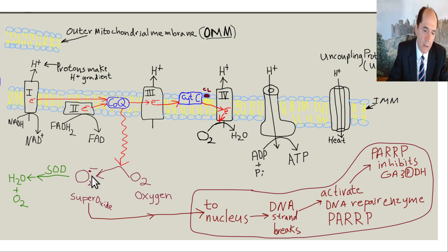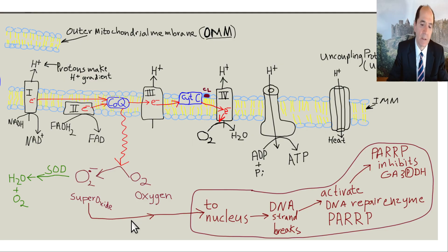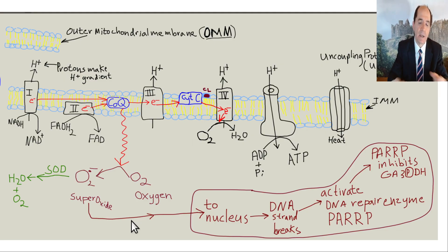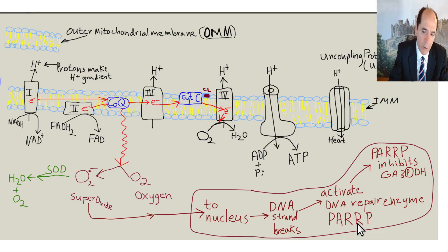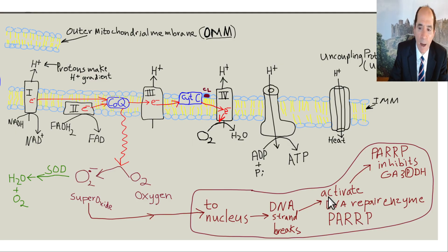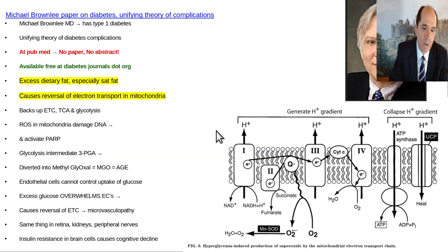Superoxide is an anion with an unpaired electron in its outer orbital. It can damage mitochondrial DNA and nuclear DNA, which activates a DNA repair enzyme called PARP. PARP can then travel to the cytoplasm and inhibit glyceraldehyde 3-phosphate dehydrogenase — a critical enzyme you need to know about.